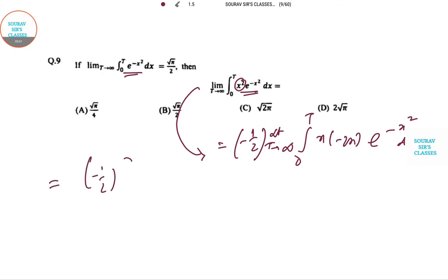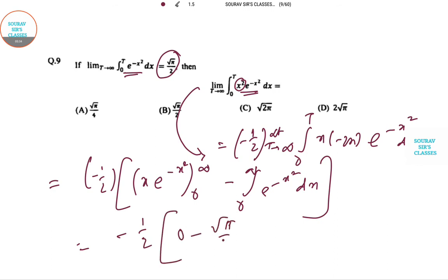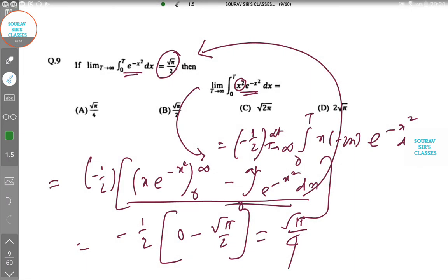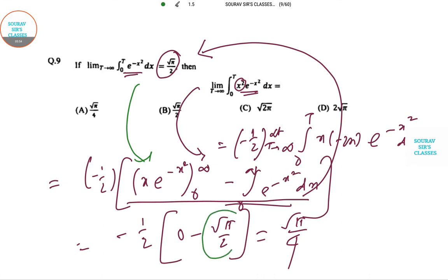So if we just do it minus half and the derivative is x into e to the power minus x squared, 0 to infinity, minus 0 to infinity e to the power minus x squared dx. We just put the values and remember that this whole part is given as root pi by 2. So minus half is common and this whole thing is 0 minus root pi by 2. This is becoming root pi by 4. Our correct option is A.